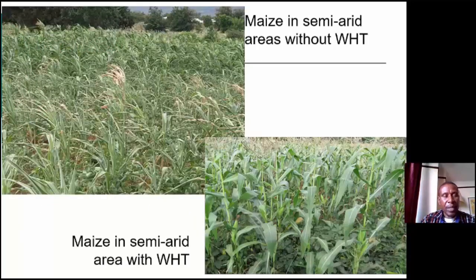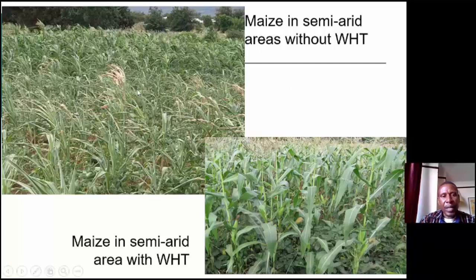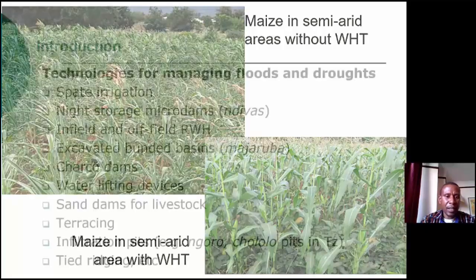This picture shows a typical situation of farmers when they decide to cultivate in a rain-fed system without using any intervention — you see crops failing. But when you intervene with water harvesting systems, farmers are assured of harvesting at least a reasonable yield. Otherwise, especially in arid areas, you won't harvest anything.